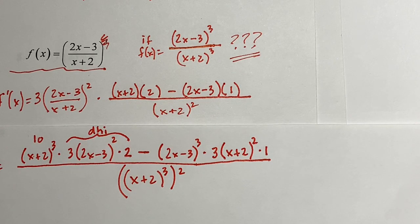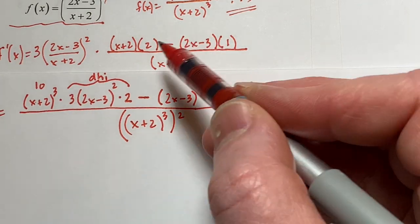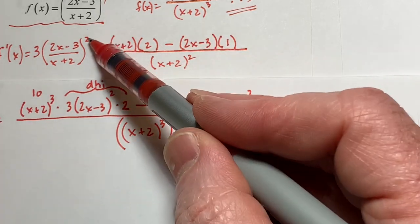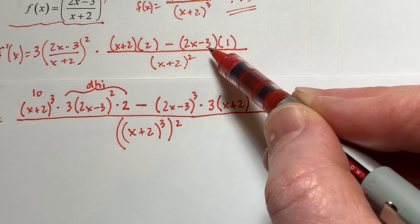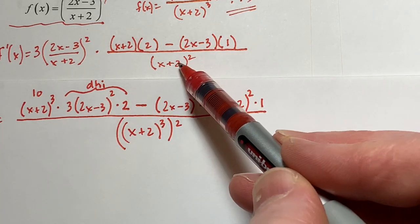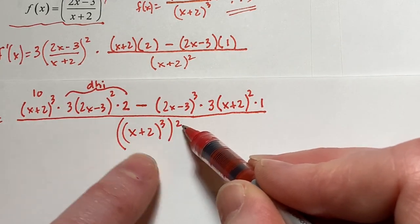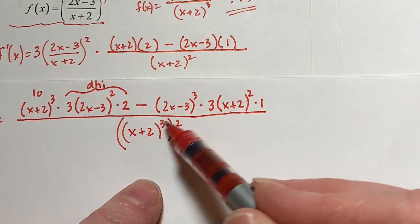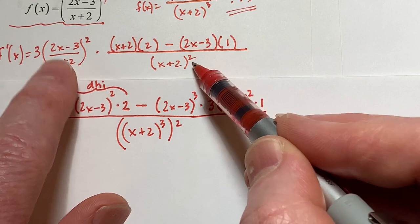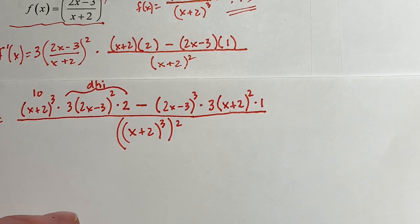These two answers don't look anything alike, but if you really look closely you can see they're the same. Here you've got x plus two to the sixth on the bottom. Looking at that other form, you can find x plus two squared factors that cancel, eventually leaving x plus two to the fourth as a common factor — which is what you end up having in the other form. In reality, if you were to expand everything out, the two methods would agree.